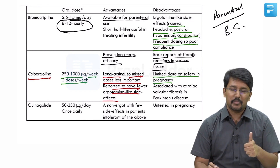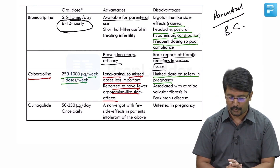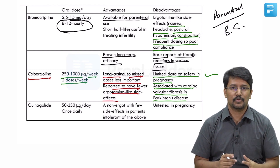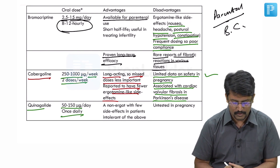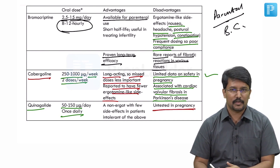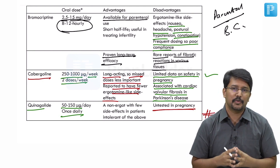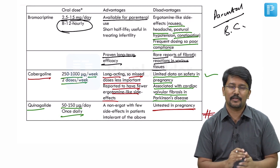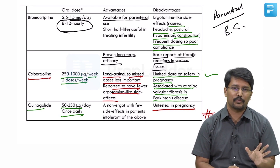The slide mentions limited data on safety in pregnancy, but emerging data shows cabergoline is as safe as bromocriptine for treating hyperprolactinemia in pregnancy. Cabergoline is also associated with cardiac valvular fibrosis, but only at doses used for Parkinson's disease, not for hyperprolactinemia. Quinagolide is used at 50 to 150 micrograms per day once daily; being non-ergot, it lacks the common ergot side effects. However, it has not been tried in pregnancy, making it a strict contraindication. Bromocriptine remains the drug of choice in pregnancy due to its extensive data, though cabergoline data is also accumulating.